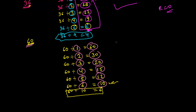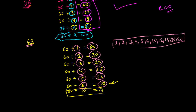So the factors of 60 are 1, 2, 3, 4, 5, 6, 10, 12, 15, 30, and 60. Counting them: 1, 2, 3, 4, 5, 6, 7, 8, 9, 10, 11 — there are 11 numbers which can divide 60 exactly without any remainder. These are the factors of 60.